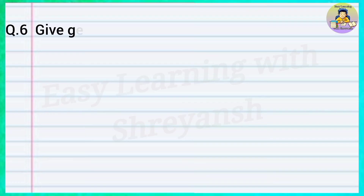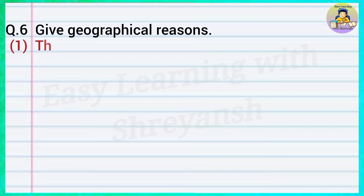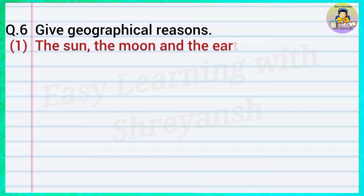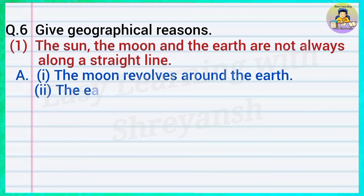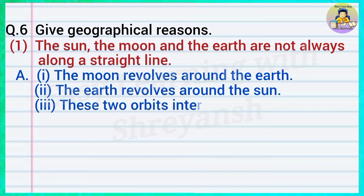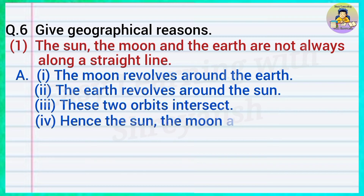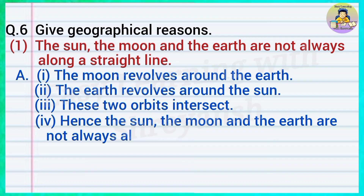Question number six, give geographical reasons: One — the sun, the moon and the earth are not always along a straight line. Answer: The moon revolves around the earth and the earth revolves around the sun. These two orbits intersect; hence the sun, the moon and the earth are not always along a straight line.